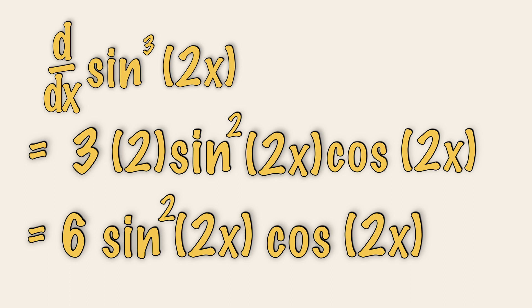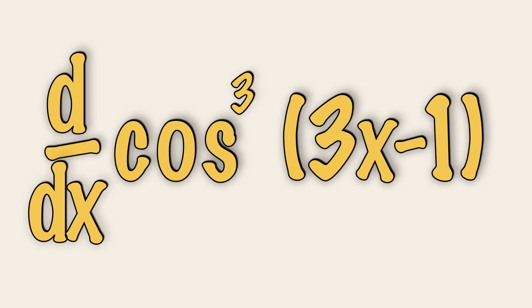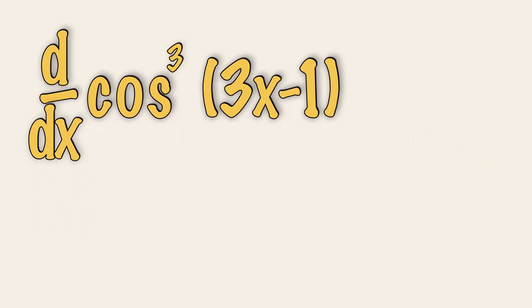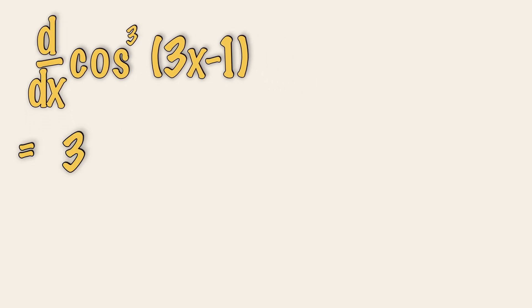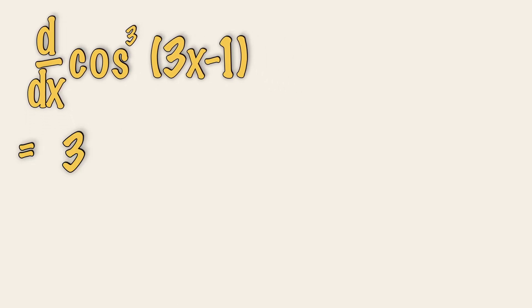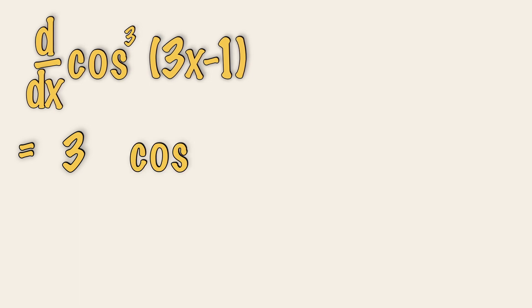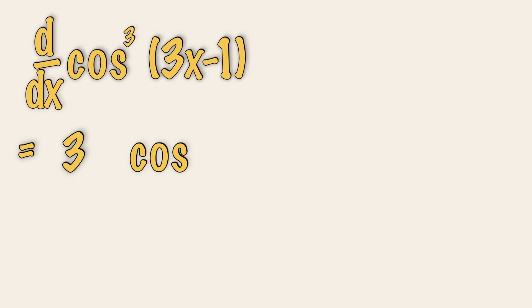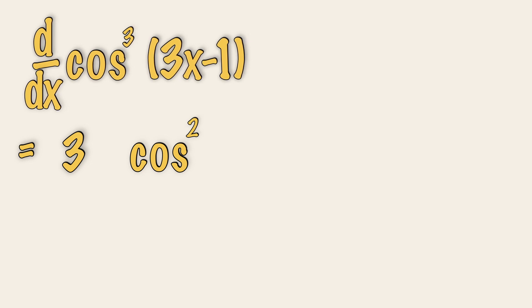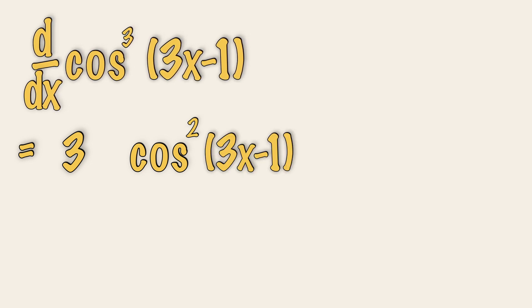Now the important thing over here is to get the flow right. So let's try a cosine now. Remember, bring down the power, which is 3. Retain the original trigonometric ratio, which is a cosine, minus 1 to the power, which gives us a 2, and copy down the same angle, 3x minus 1.